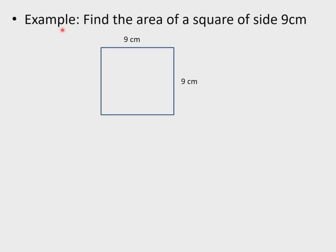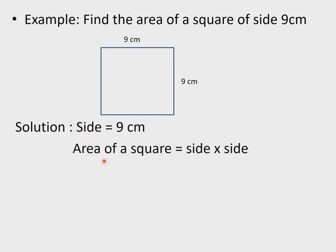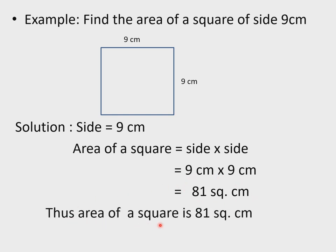Now let's do an example using the formula for the area of a square. Find the area of a square of side 9 cm. Solution: side = 9 cm. Area of a square = side × side = 9 cm × 9 cm = 81 square cm. Thus, area of the square is 81 square cm.